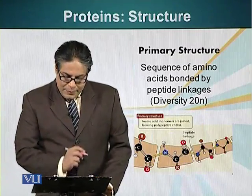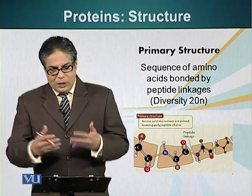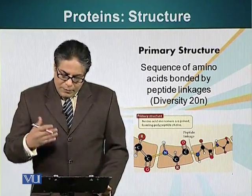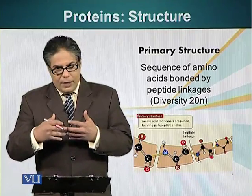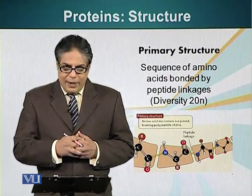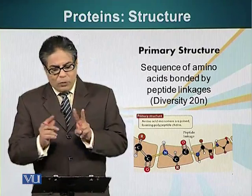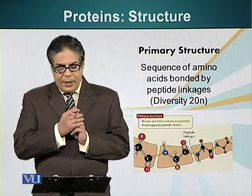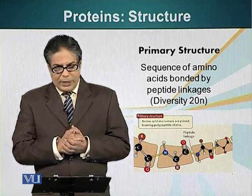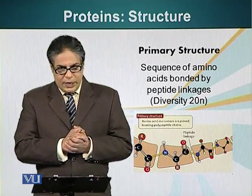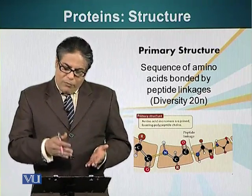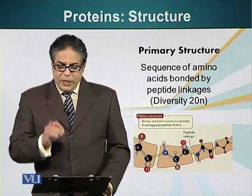The primary structure, as I mentioned, is basically the result of these peptide bonds — the sequence of different amino acids in a protein molecule. The diversity of different combinations we can form by linking amino acids is very great. If we want to link two amino acids together, we can have 400 different combinations. As we have mentioned, there are 20 amino acids, so the formula for calculating diversity is 20 to the power of N.